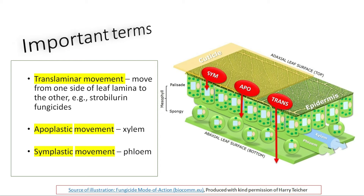Then we have apoplastic movement and symplastic movement. Apoplastic movement occurs in the dead part of the tissue where there is no cytoplasm involved, like xylem movement — systemic fungicides mostly show apoplastic movement, meaning they are xylem-mobile. Symplastic movement occurs through the phloem or the living part of the cell. These two types of movement are important for understanding differences in mobility of fungicides.